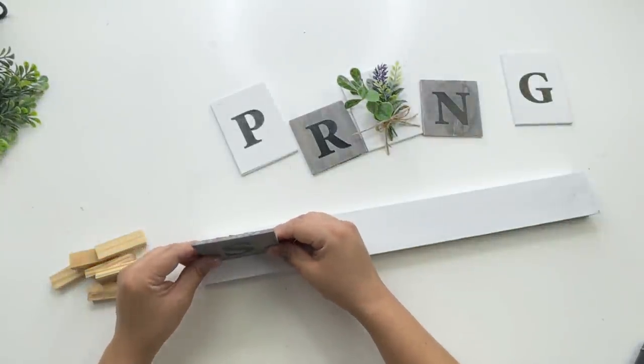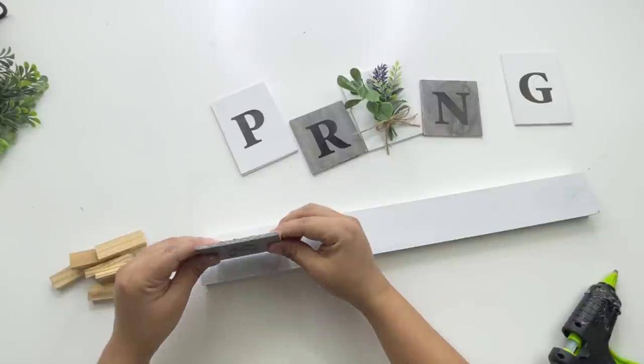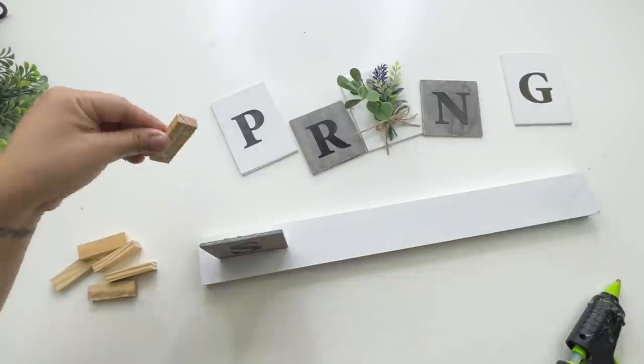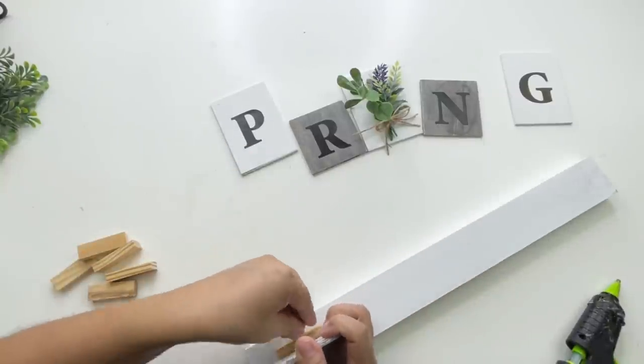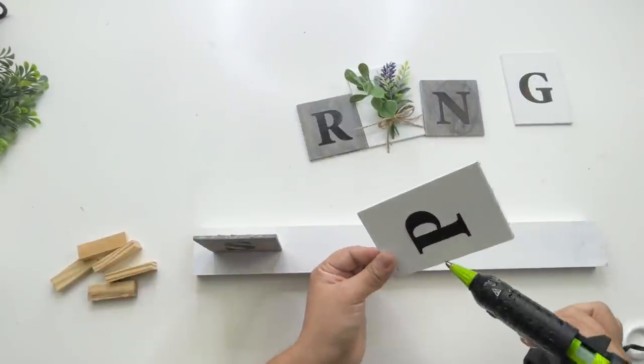And look how beautiful it's turning out now. Now the next thing I did was just glue these little wood slats, and the way I'm doing it is I'm going to overlap them but just a tiny bit to where you can still see the words. And I'm using some Jenga blocks on the back for extra support.